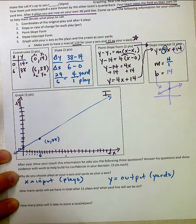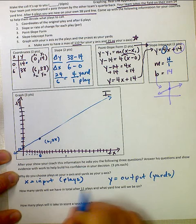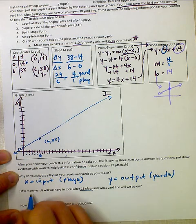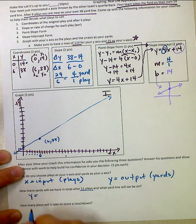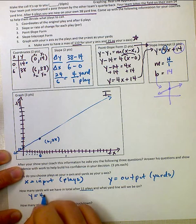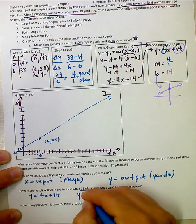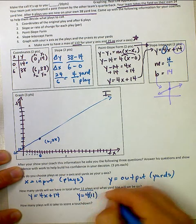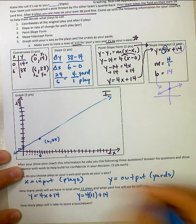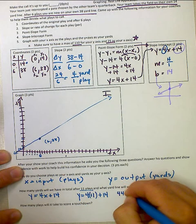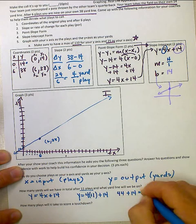It says, how many yards will we have in total after 11 plays? And what yard line will we be on? Well, we know plays just like we said as our input. And we know our function is y equals 4x plus 14. So I could just simply plug in for x here. y is equal to 4 times 11 plus 14, 44 plus 14, 58.